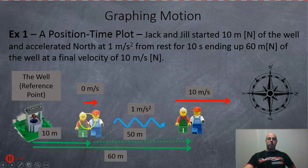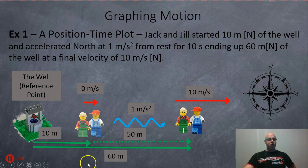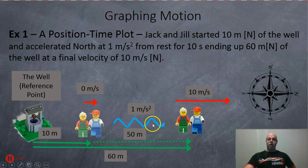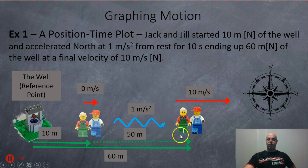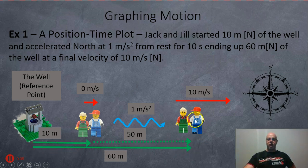Here's the well. If I rotate my compass, north is on the right-hand side. They start off 10 meters from the well at zero meters per second, accelerate at one meter per second squared, and do that for 10 seconds. They end up displacing 50 meters and ending up 60 meters from the well, now moving at 10 meters per second.